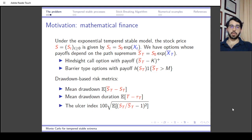Under the exponential tempered stable model, we model the asset process as the exponential of a Levy process. In particular, we use a tempered stable process. One such example, very popular, is the CGMY process.